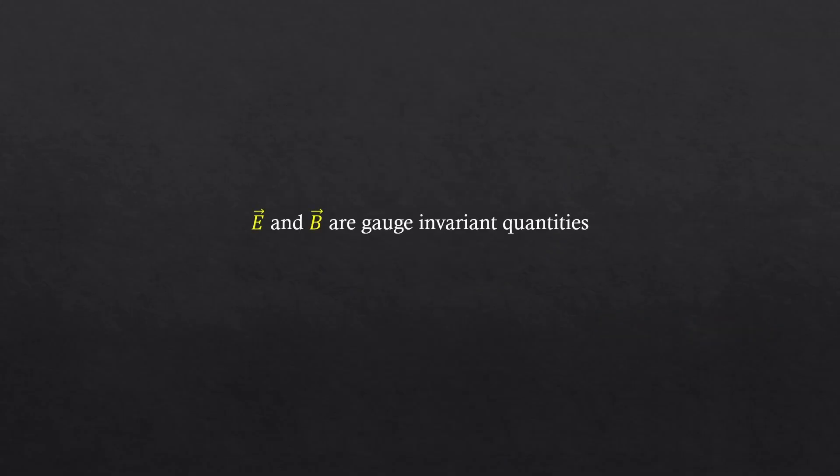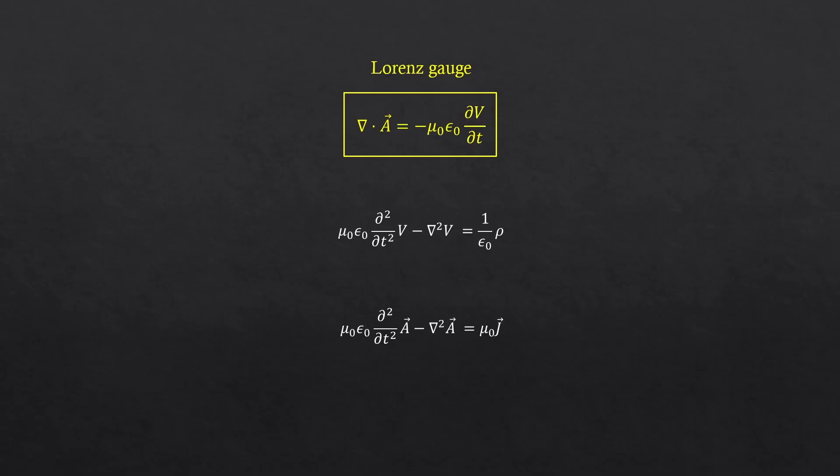We managed to compress Maxwell's four equations into two equations by expressing them in terms of potentials. But you know what? If we choose the Lorentz gauge, we can take it a step further and combine those two equations into a single equation. Let's see how that is possible.